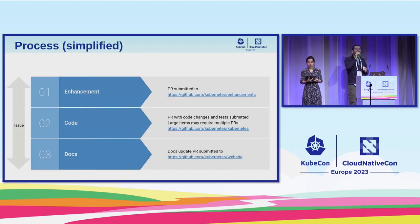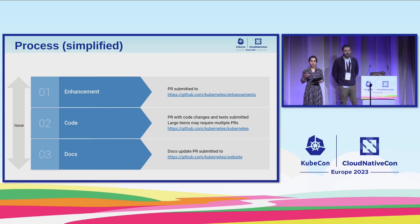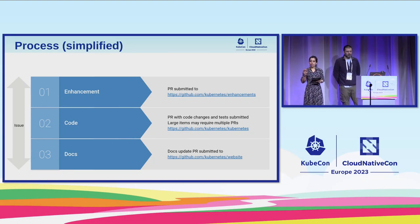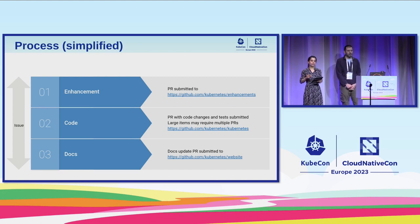To simplify the process, there are three stages — three different repos where you have to make changes. The first one is the enhancement repo, where you contribute to submit a particular proposal. Then you have the set of PRs submitted to the Kubernetes repo, often referred to as K8s. And then you finish up by submitting your changes to the Kubernetes website repo, which includes all documentation-related changes.